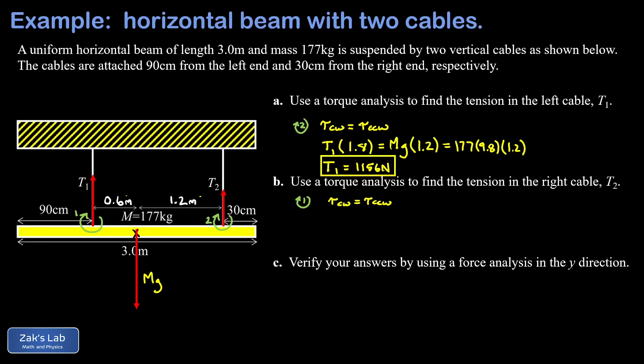With respect to this new rotation axis, gravity is trying to twist the beam in the clockwise direction. The size of that torque is mg multiplied by 0.6, the distance between the attachment point of the vector mg and the rotation axis at T1. Now it's T2 that's exerting a counterclockwise torque, so I have T2 multiplied by the distance between its attachment point and our rotation axis, which is 1.8 meters.